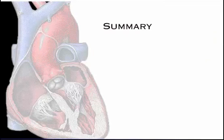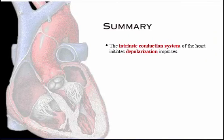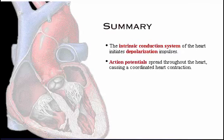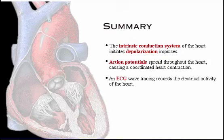Here's a summary of what we've covered. The intrinsic conduction system initiates depolarization impulses. Depolarization spreads throughout the heart, causing a coordinated heart contraction. An ECG wave tracing records the electrical activity of the heart.